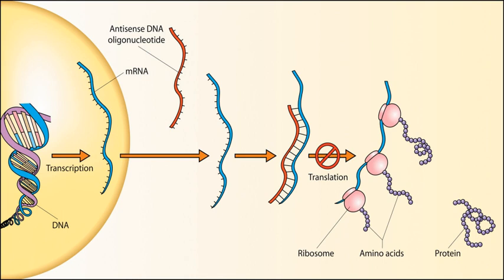Some alternative antisense structural types are being experimentally applied as antisense therapy, with at least one antisense therapy approved for use in humans. When mRNA forms a duplex with a complementary antisense RNA sequence, translation is blocked. This process is related to RNA interference.